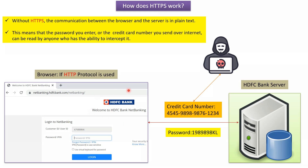On the left side you can see HDFC bank website, and on the right side you can see HDFC bank server. Suppose the HDFC bank website is using HTTP protocol — then whatever information is sent from this browser to the HDFC bank server will be plain text. If the user enters a credit card number and password, that data will be sent as plain text and can be easily intercepted and read by hackers, who can then misuse it.